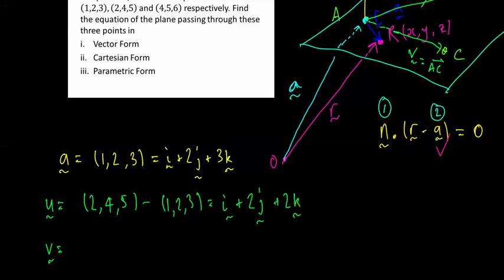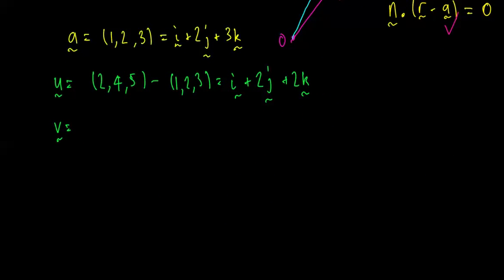v is equal to a, c, which is (4,5,6) minus (1,2,3). 4, 5, 6 minus 1, 2, 3. v, that's equal to 4 minus 1, 3i. 5 minus 2, 3j. And 6 minus 3, 3k.